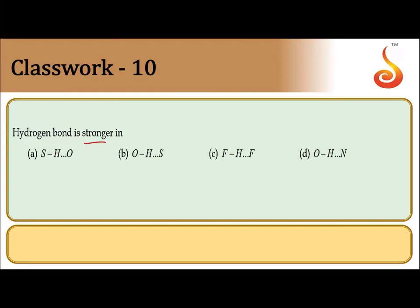Next: hydrogen bond strength depends upon the electronegativity of the atom attached to hydrogen. Among the four options, fluorine has the highest electronegativity compared to oxygen, sulfur, or nitrogen. Therefore option C will have the stronger hydrogen bond.